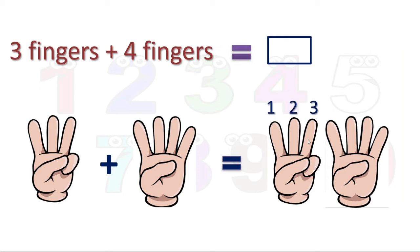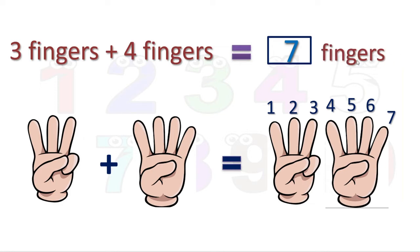Now what we will do? We will count forward. See, this is fourth — after three comes four. So fourth. This is fifth. Next finger, sixth. And last one, that is seventh finger. What we did? We counted in forward direction. After three, we counted four numbers and we got the last number seven. So seven is our answer. Three fingers plus four fingers together give us seven fingers.